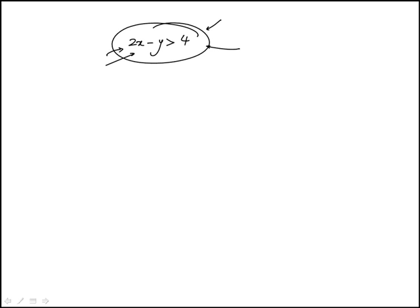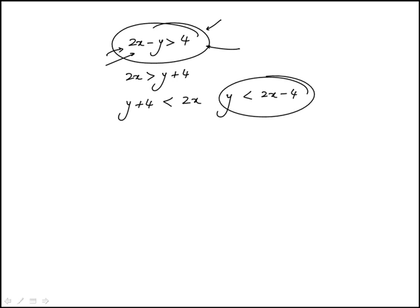I'll first write the corresponding equation of line form. I'm going to move the y term to the other side. So this becomes 2x is less than y plus 4. I can rewrite it in that form. So this means y is less than 2x minus 4. The equation of line that this inequality corresponds to is y equal to 2x minus 4.